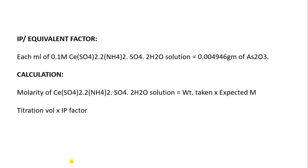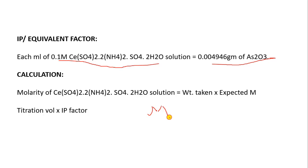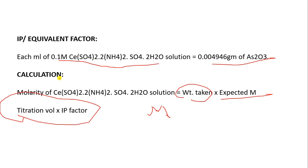Each mL of 0.1 molar ceric ammonium sulfate is equivalent to a calculated amount of As₂O₃. To find the molarity of the solution, use the equation: weight taken divided by expected molarity, then titration volume times the equivalent (IP) factor. This is the general calculation for this titration.